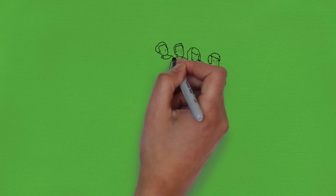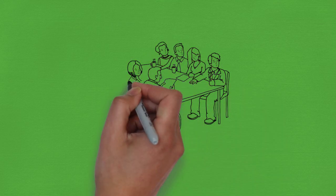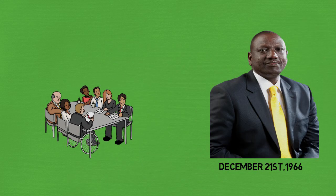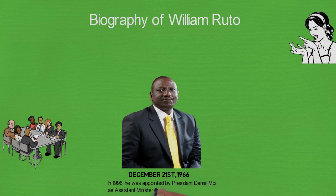He was secretary-general of the Kenya African National Union, Kanu, the former ruling political party, and member of parliament for Eldoret North constituency between 1997 and 2013. In 1998, President Daniel Arap Moi appointed Ruto to the position of assistant minister in the office of the president,